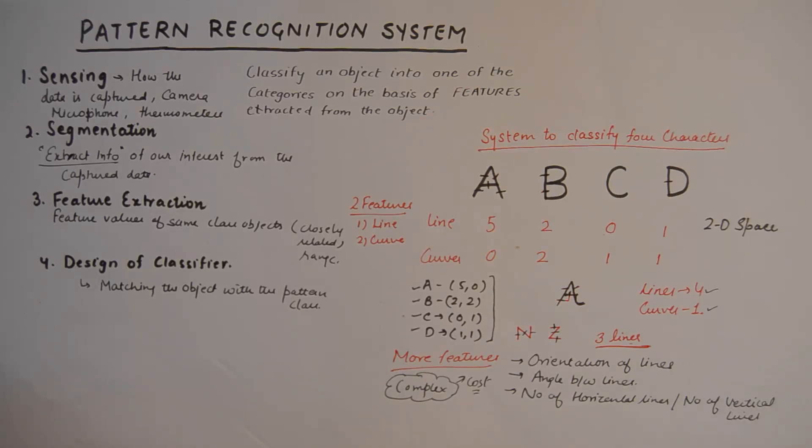And finally, we have the design for classifier. Once all the features are calculated, the values for those features are calculated, then finding an exact match of the object with the pattern class or with the database is the only job left with the pattern recognition system. And once that job is done, we get to a result which is correct. So these are the four building blocks. These building blocks need to be designed meticulously for any system to work correctly.